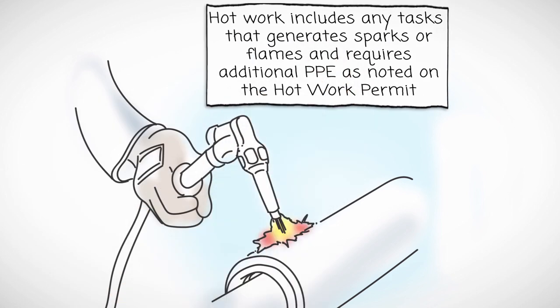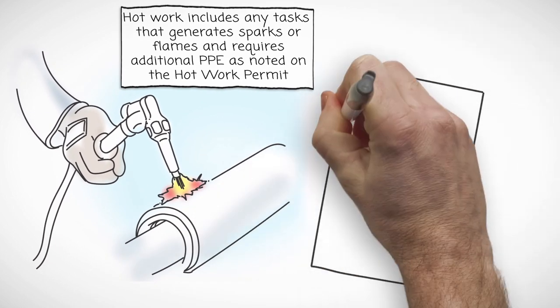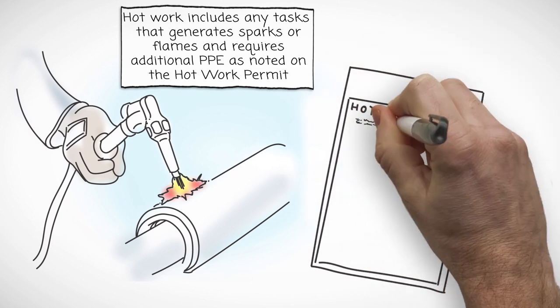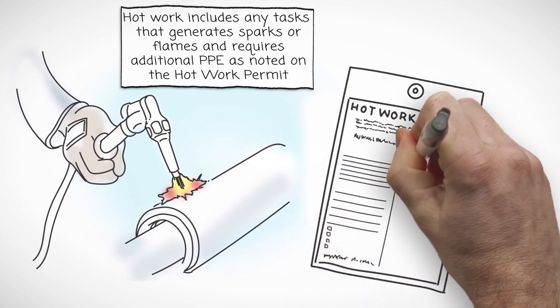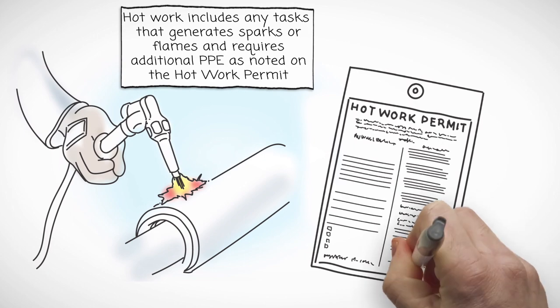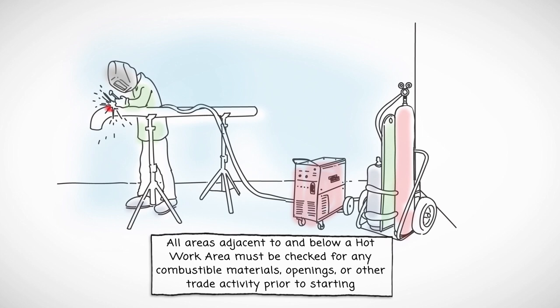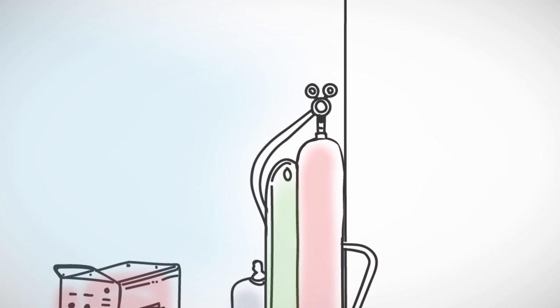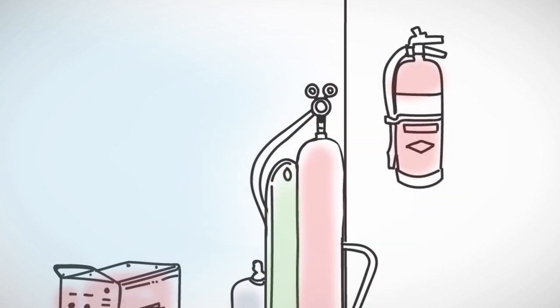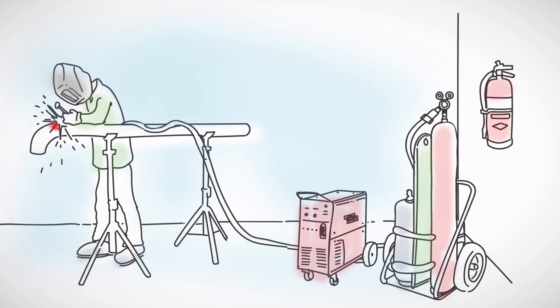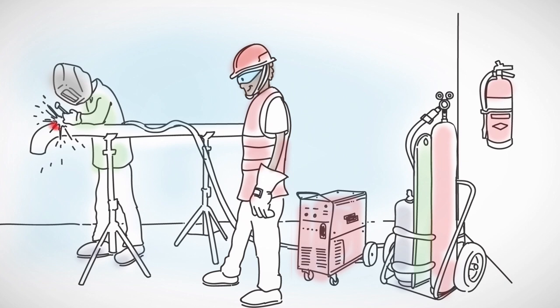Hot work includes any tasks that generate sparks or flames and requires additional PPE as noted on the hot work permit. An approved plan and hot work permit are required before hot work can begin. Hot work permits are limited to the time, date, task and area specified on the permit and the approved permit must be posted in the hot work area. All areas adjacent to and below a hot work area must be checked for any combustible materials, openings or other trade activity prior to starting. A minimum 20-pound ABC dry chemical fire extinguisher is required for a hot work area and flashback arresters must be located on the torch head and cylinders. A fire watch must be posted anywhere sparks could fall and must remain in the hot work area at least 30 minutes after any hot work activity has ended.